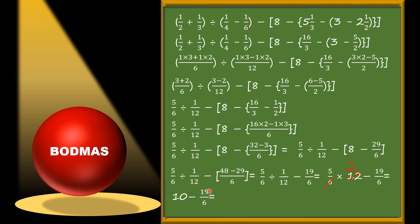Now we subtract 19/6 from 10. We take LCM which is 6: (10×6 − 19)/6 = (60 − 19)/6 = 41/6. Because it is improper, we convert to a mixed number: 6×6 = 36, so the whole number is 6 and the remainder gives 5/6. So the final answer is 6 and 5/6.